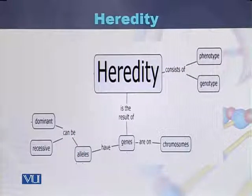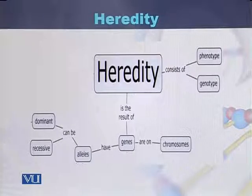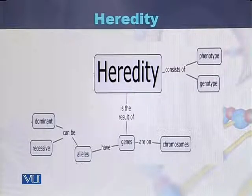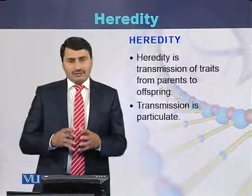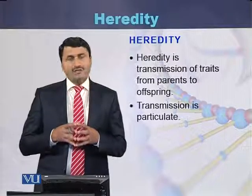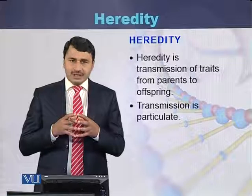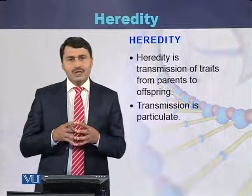To conclude: heredity consists of phenotype as well as genotype, and heredity is the result of genes. Genes are present on chromosomes, and genes have alleles, which can be dominant or recessive. Heredity is the transmission of traits from parents to offsprings, and this transmission is particulate in nature.